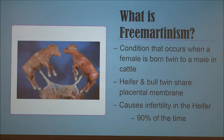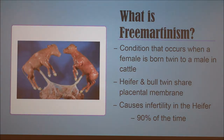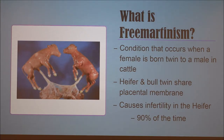Freemartinism is a condition that occurs in cattle, which are normally not litter-bearing species. This condition happens when a female is born twin to a male. Cattle typically only have one calf per year; however, twins occur about one in every 200 births. About 50% of these sets contain both a heifer and bull calf, which is what you see in this picture — an example of a heifer and bull calf in utero together.